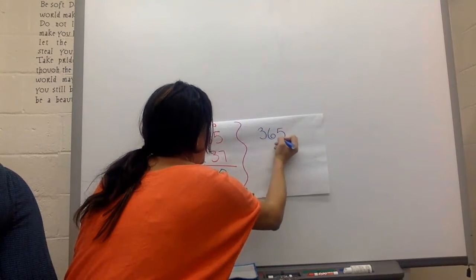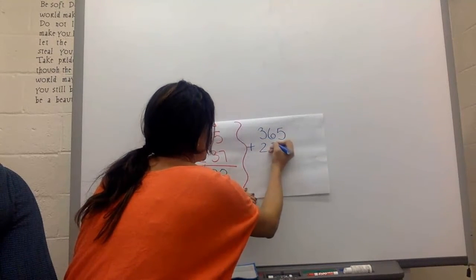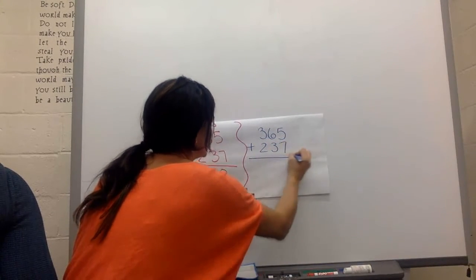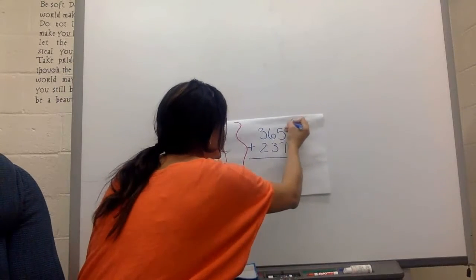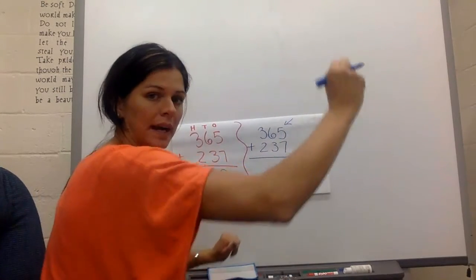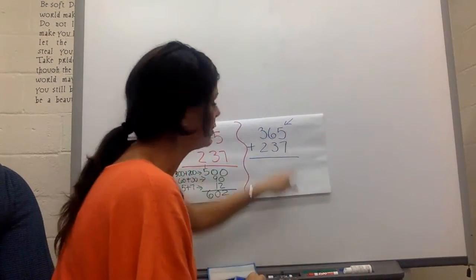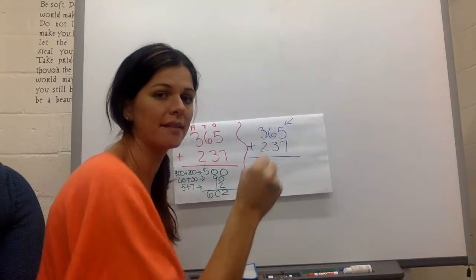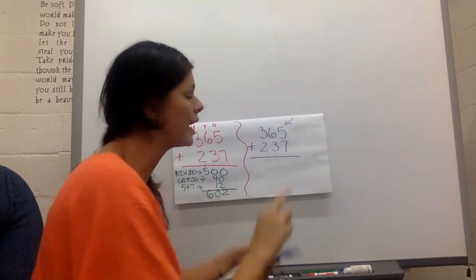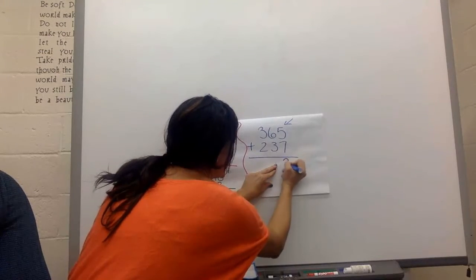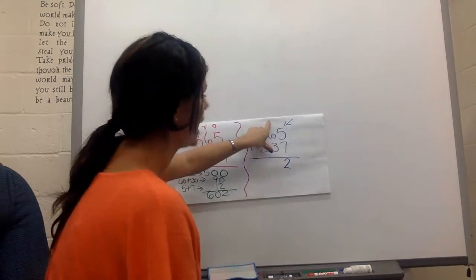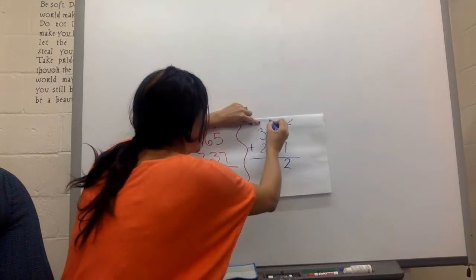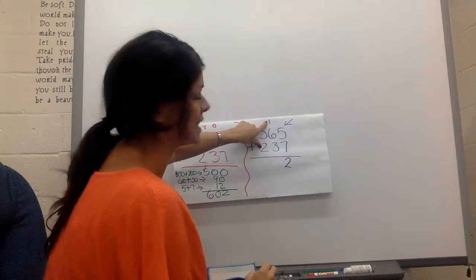Three hundred sixty-five plus two hundred thirty-seven. Okay, you always start in the ones. We're on the right-hand side. Five plus seven. Seven, eight, nine, ten, eleven, twelve. You put the two down, and then you carry the one on the elevator. So you brought him over to the tens.